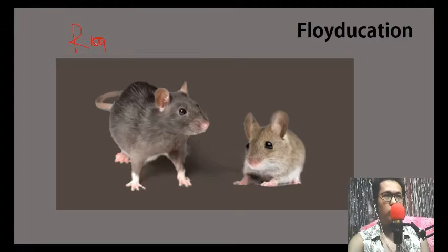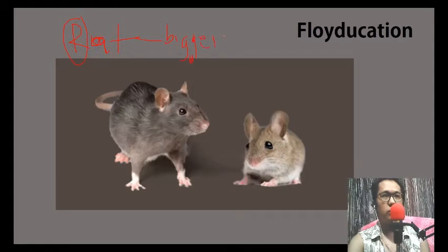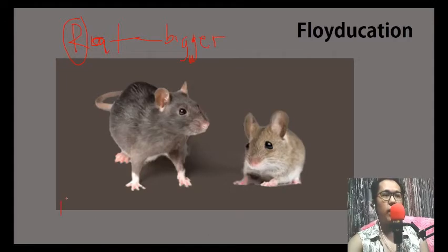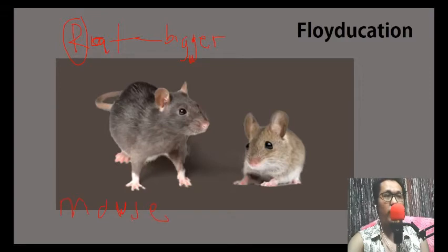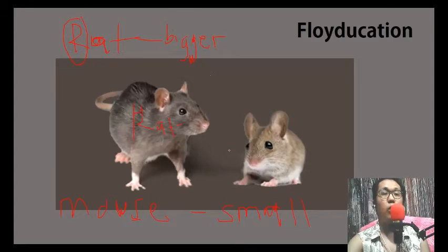When we're talking about rat, R-R-R, about rat. R-R-R. Bigger. When we're talking about mouse, we have S here. So small. The bigger here is a rat. And smaller here, we have the mouse.